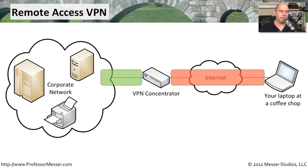Traffic is sent in the clear to the VPN concentrator, which then encrypts it, puts it onto the tunnel, and provides it back to your laptop.